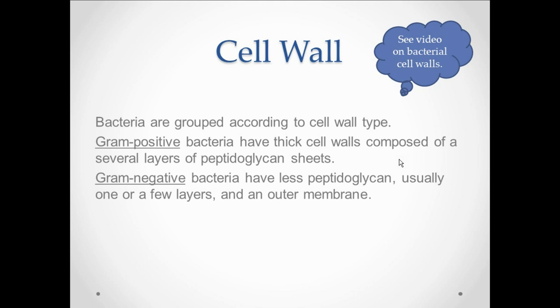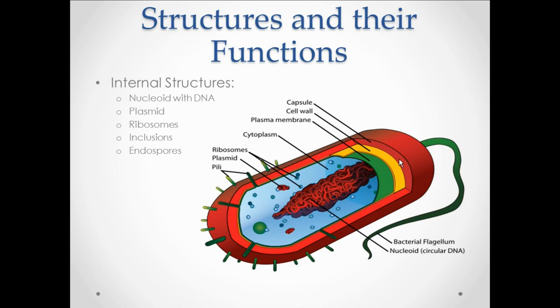Now, back to the cell wall for just a moment. This is generally an area in which students have difficulty understanding the composition. Therefore, there is a separate video describing bacterial cell walls and I will refer you to that video. However, for most bacteria it's going to be composed of what is referred to as peptidoglycan and the thickness of the peptidoglycan helps us to identify two main groups of bacteria, gram positive and gram negative. Gram positive bacteria will have multiple layers of peptidoglycan sheets and so therefore their cell wall will be very thick. Gram negative bacteria have only one or two layers of peptidoglycan and therefore they will have a thin cell wall.